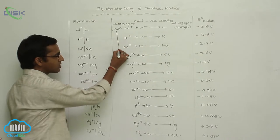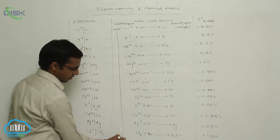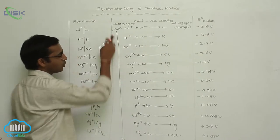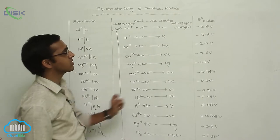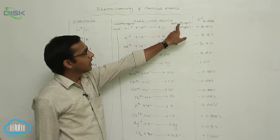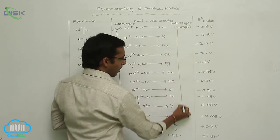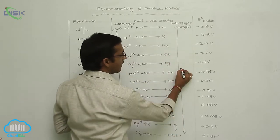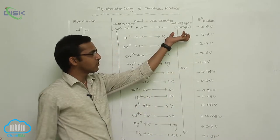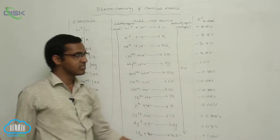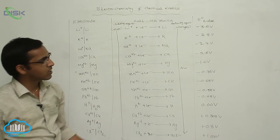From top to bottom, oxidation potential values increase. From top to bottom, reduction potential values decrease. In the series, oxidation potential values increase going downward.